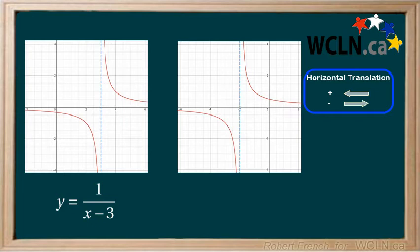For the second example, we have a vertical asymptote at x equals negative 2. When writing the equation, we add 2 to x.